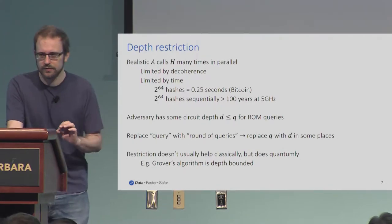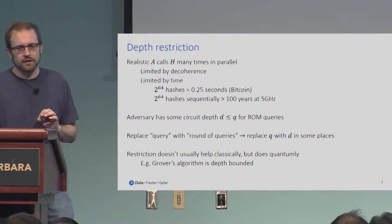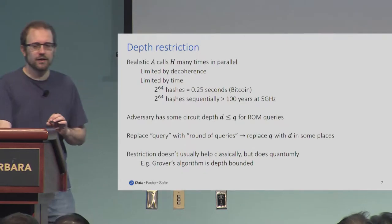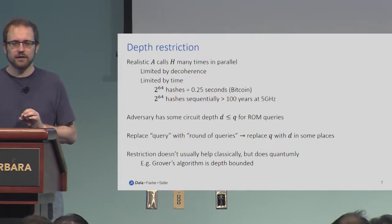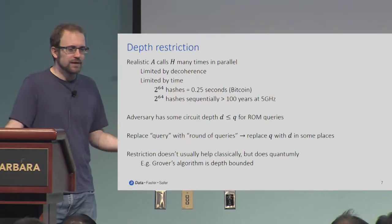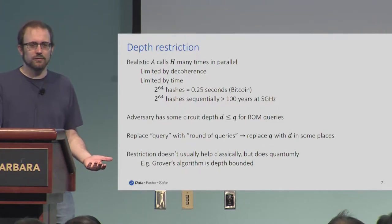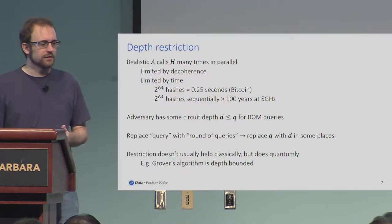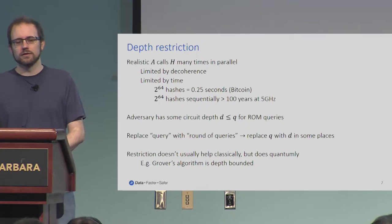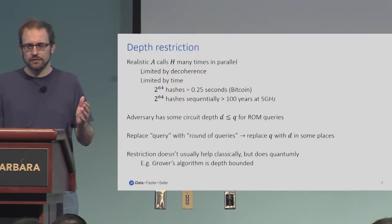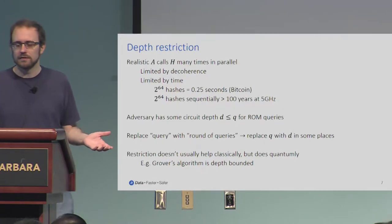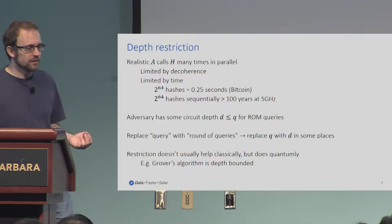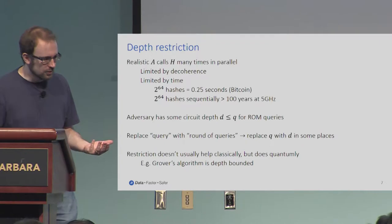Before we do that, one note on depth restrictions. A realistic adversary querying an oracle many times is practically going to have to do this in parallel. If you want to make 2^64 queries to an oracle for your attack — if you're Bitcoin, you're doing this four times a second because the Bitcoin network has a huge number of ASICs operating in parallel. But if you were to do this sequentially, even at five gigahertz every clock cycle, it would take more than a hundred years. So essentially no adversary on computers we know about is going to be able to do 2^64 sequential work, but they might very well be able to do 2^64 parallel work.